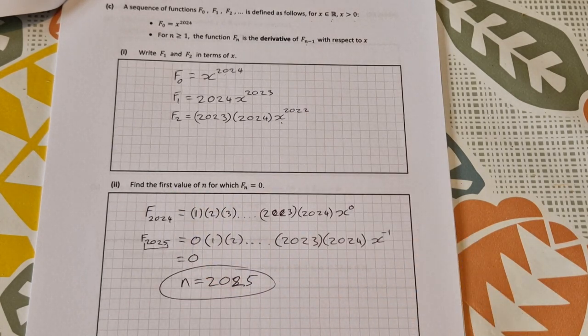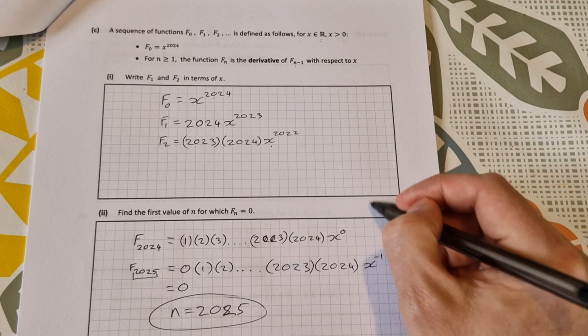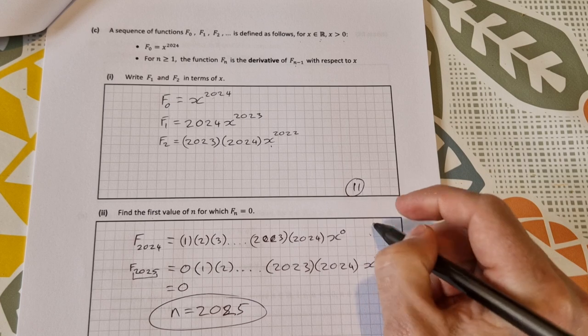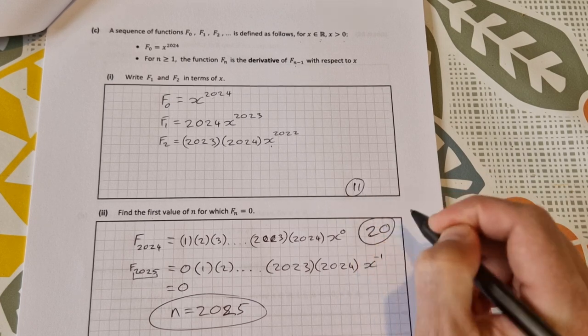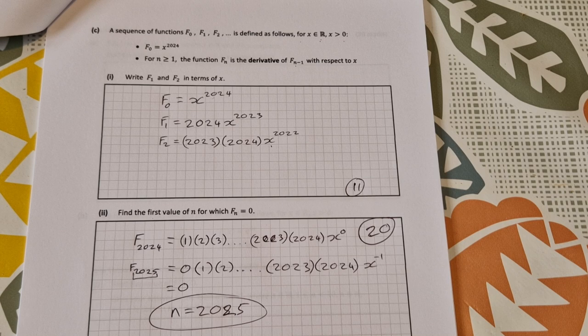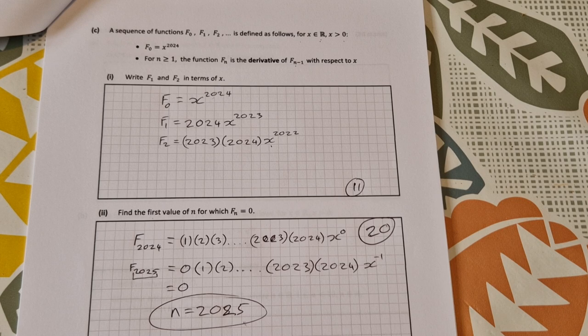So this part c all together was worth 20 marks. If you got either one of them right you got 11, and then if you got both of them right you got 20. So they kind of weighted it that either one you got right was worth 11, but I'd say would be difficult enough to get this one right without getting this one right. If you have any questions just ask in the comments below. Thanks for watching and I'll see you in the next video.